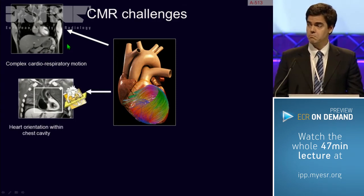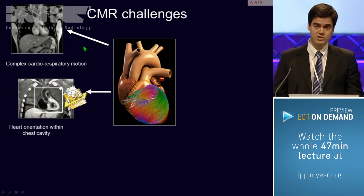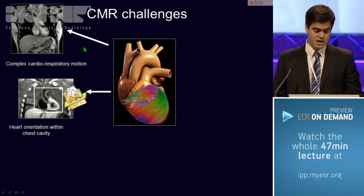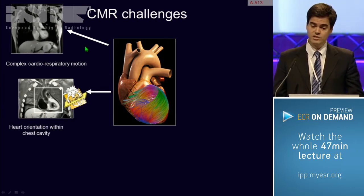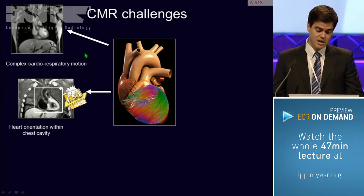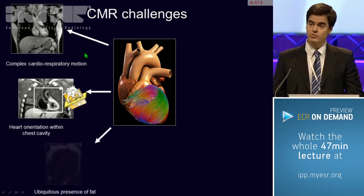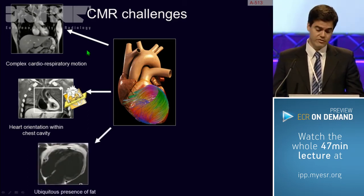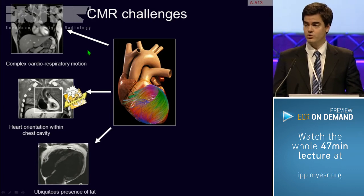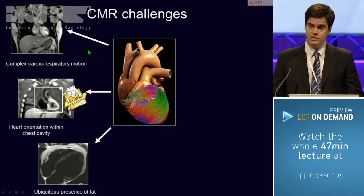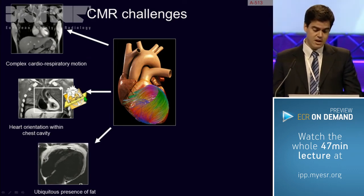The second problem we have to deal with, mostly as radiologists, is that the heart is not oriented according to coronal, sagittal, or axial planes within the chest. So we have to deal with planes that are usually non-familiar, called short axis, four-chamber view, etc. I won't focus on that further.